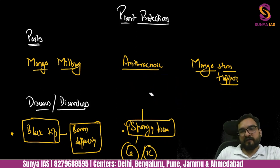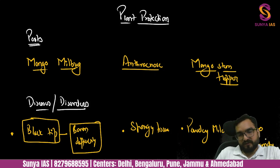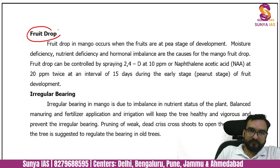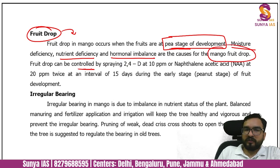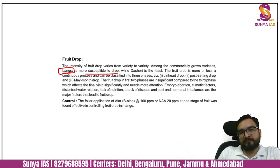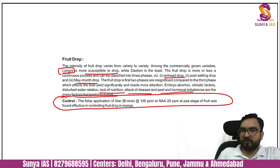Other diseases include powdery mildew and mango malformation. Another disorder is fruit drop — a very common problem occurring at the pea stage of fruit development due to moisture deficiency, nutrient deficiency, and hormone imbalance. It can be controlled by spraying 2,4-D at 10 ppm or naphthalene acetic acid at 20 ppm twice at 15-day intervals. Langda variety is most susceptible to fruit drop. Types of fruit drop include: pinhead drop, pin-setting drop, post-setting drop, and May-month drop.